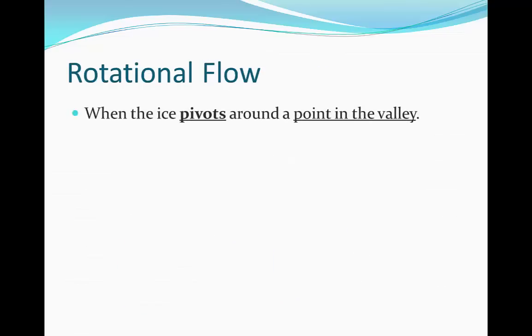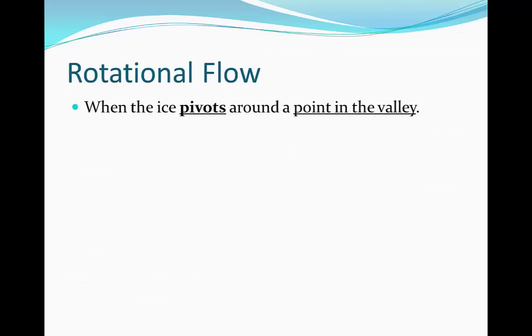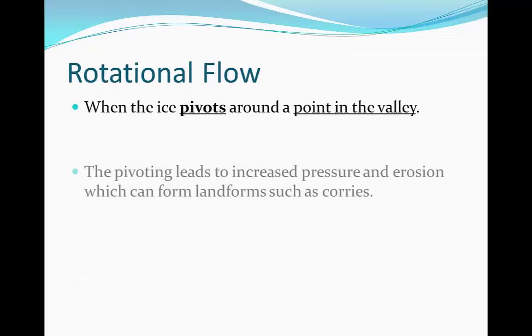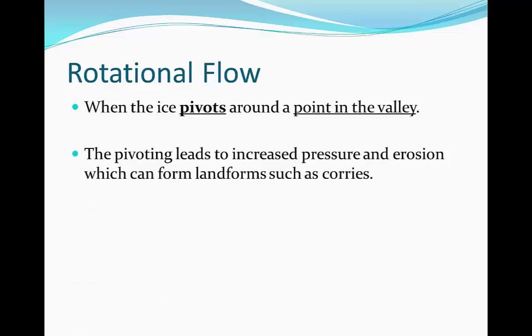Rotational flow occurs when the ice pivots around a point in the valley. The pivoting leads to increased pressure and erosion and this can actually form landforms such as corries, which we are going to look at later in the course.